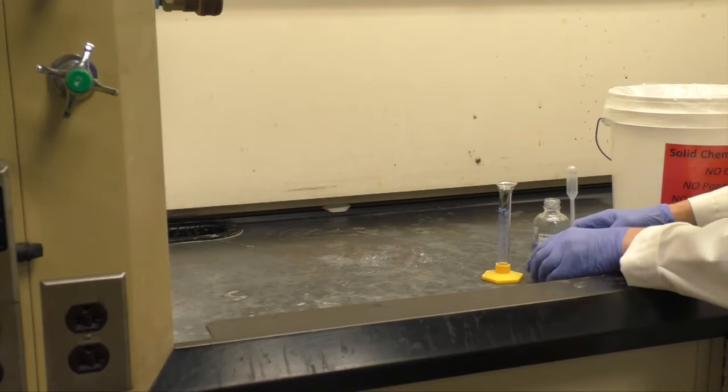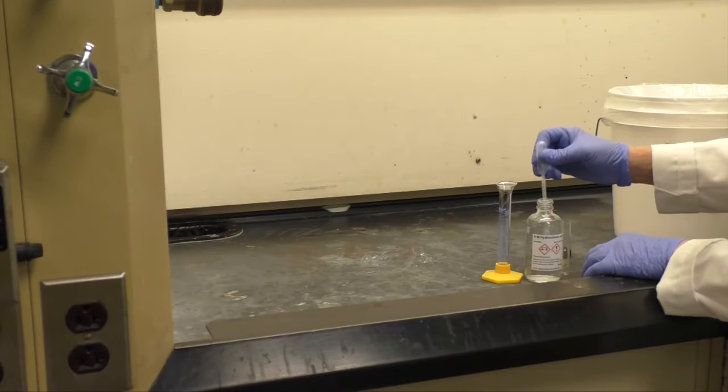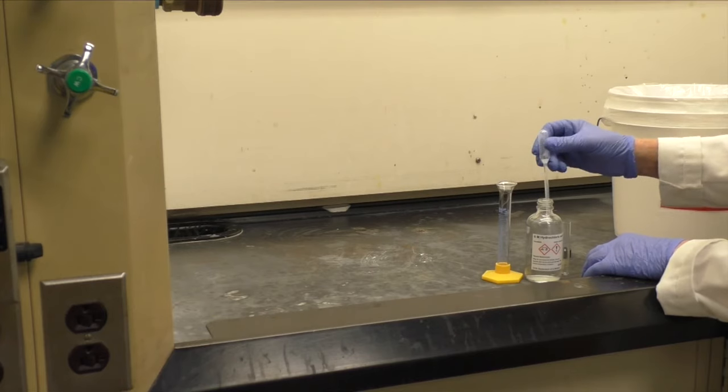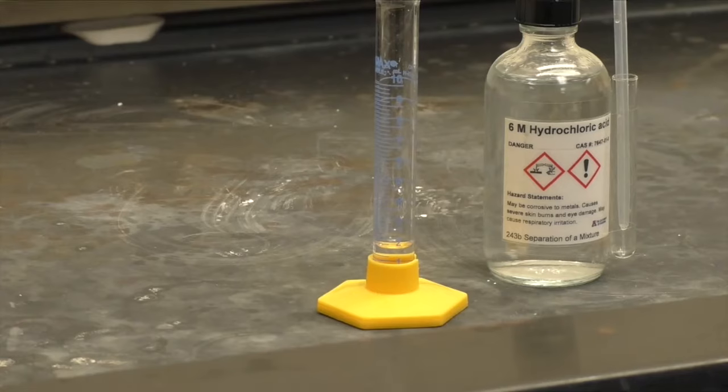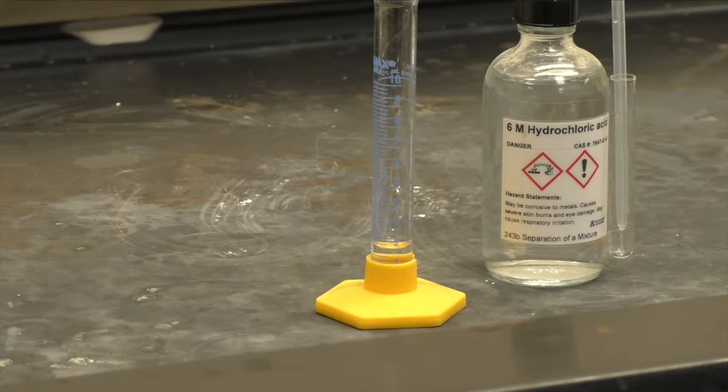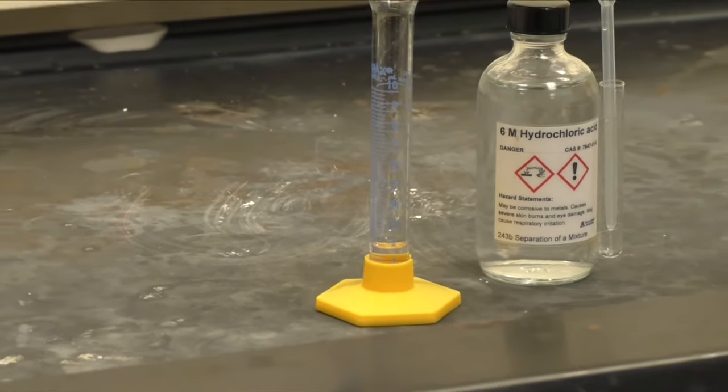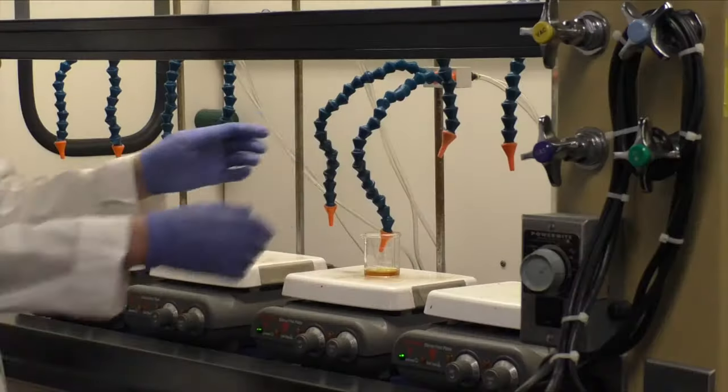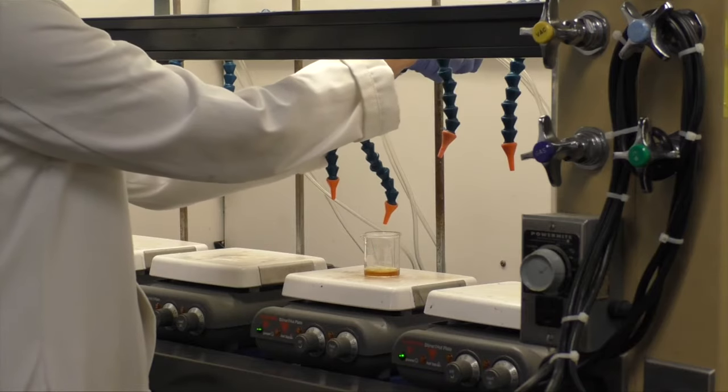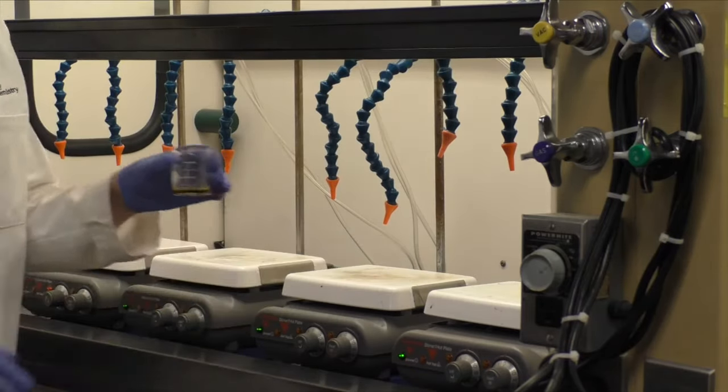While your solution is on the blow-down station, measure out 2 mL of 6 M hydrochloric acid into a graduated cylinder and take it to your bench. Remove your solution from the blow-down station and back at your bench.